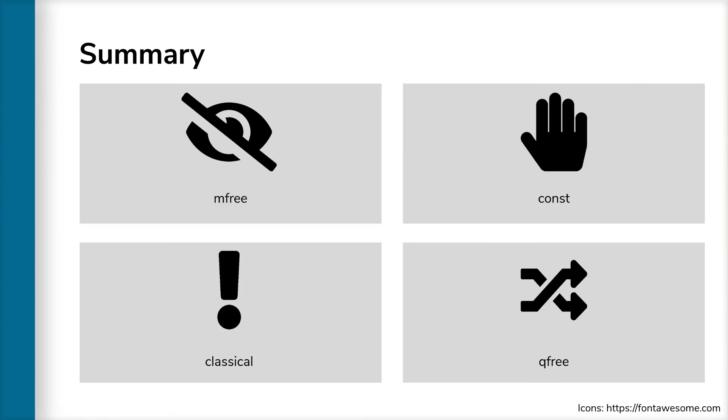To summarize, Zilk comes with a quantum type system that captures important aspects of quantum computation, including m-free for computations that do not perform a measurement, const for variables that are not modified, bang annotation indicating classical values, and q-free for computations which can be described by functions operating on classical values.